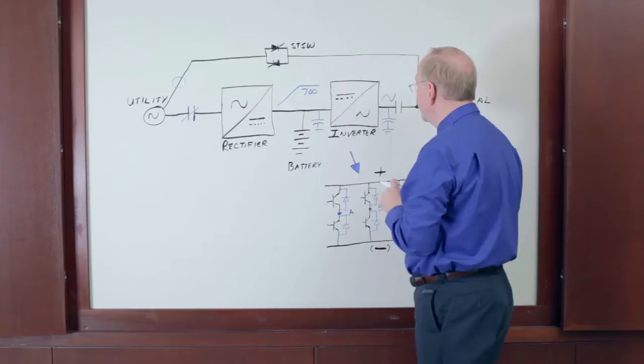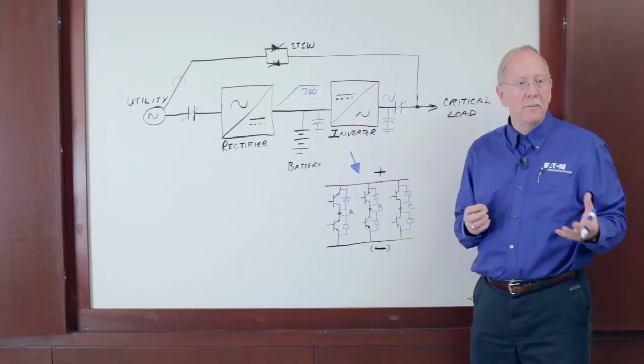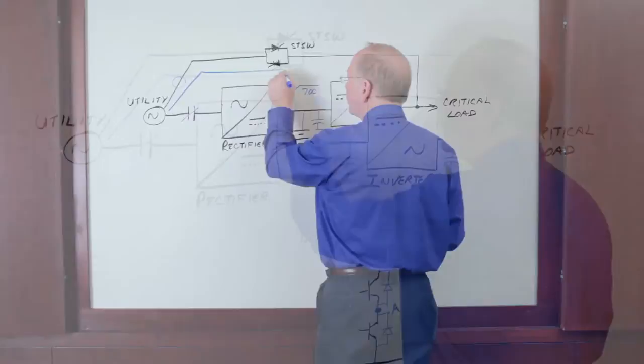So close the input contactor, ramp the rectifier for 30 seconds, turn on the inverter, synchronize the inverter, finally close the output contactor, and you have an output from the UPS. The process takes two to three minutes. It's much too long. So how does it work in a modern eco mode?